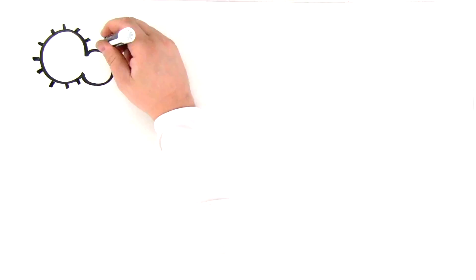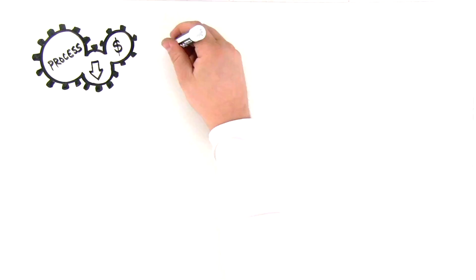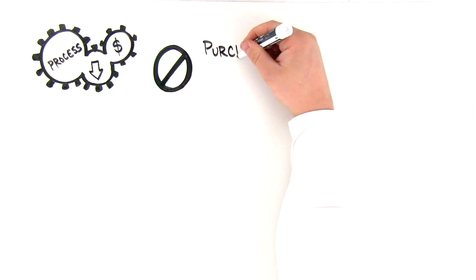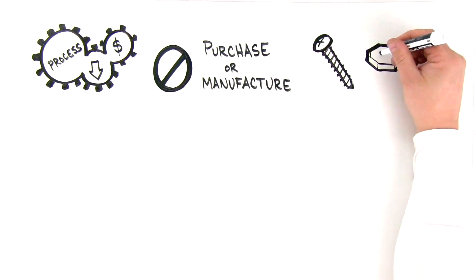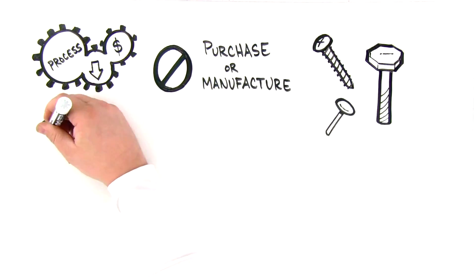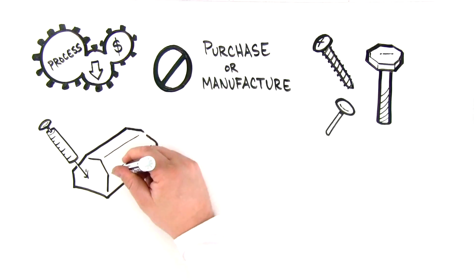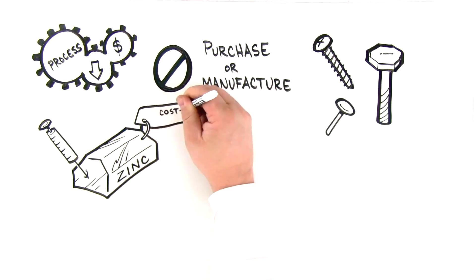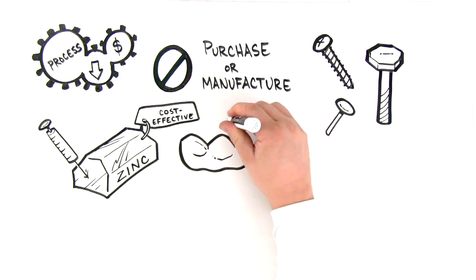This process reduces the cost of the final assembly because it eliminates the need to purchase or manufacture additional components like screws, bolts or rivets. They are all replaced by the injected zinc alloy, which is not only more cost effective but also makes the assembled parts stronger.